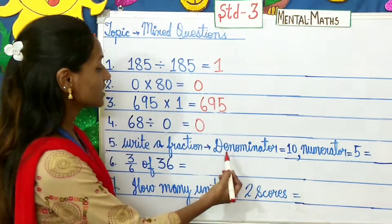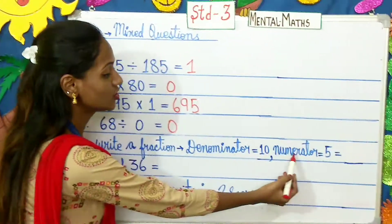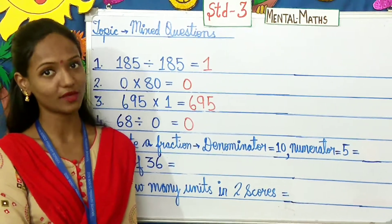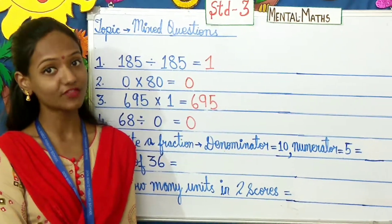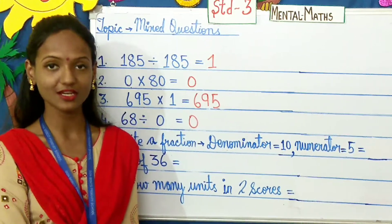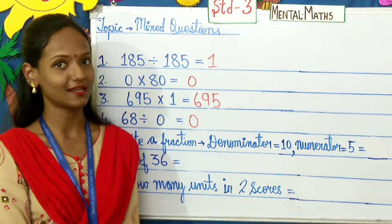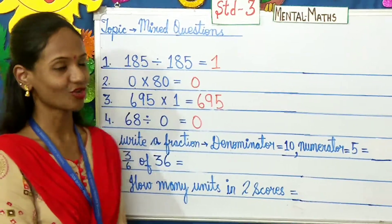Here children, there is a denominator and a numerator. A fraction has a numerator and a denominator. The number above the line is called the numerator and the number below the line is called the denominator. Come children, let us solve.